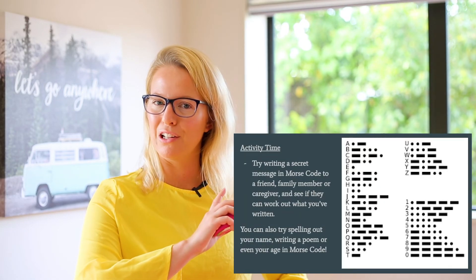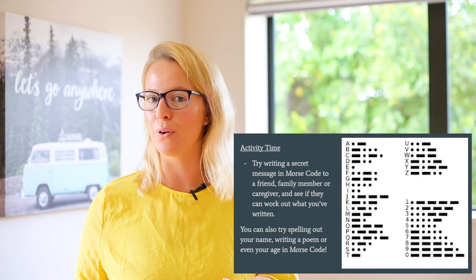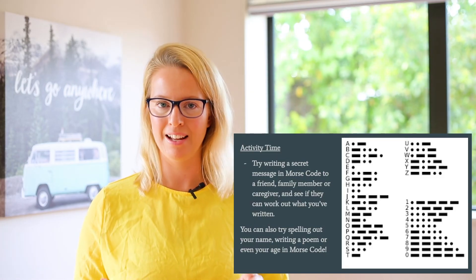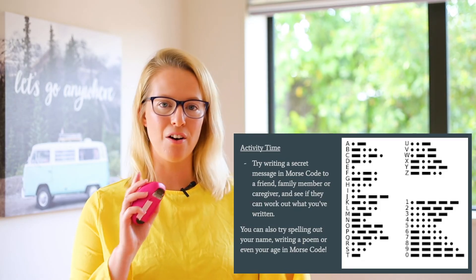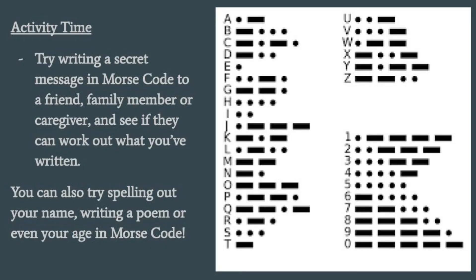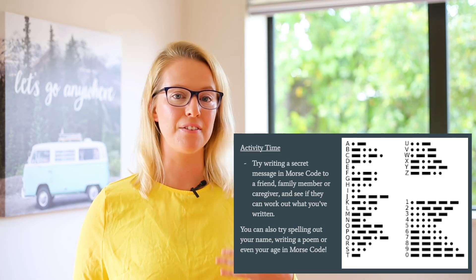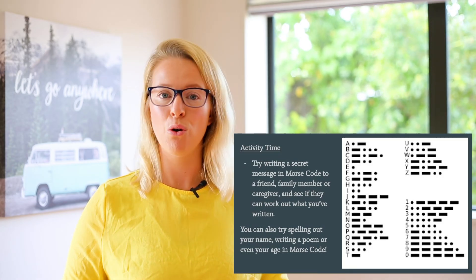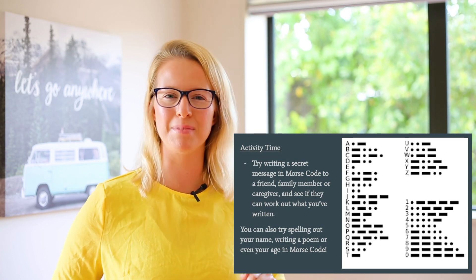Now that you've done all the learning, it is your activity time. You're going to be writing words or maybe even sentences using Morse code. Don't worry, you don't have to think of it off the top of your head — we've got the Morse code alphabet up here with all the letters down the side. You could try writing a secret message in Morse code to a friend, family member, or caregiver, and see if they can work out what you've written. You can also try spelling out your name, writing a poem, or even writing out your age in Morse code, because not only does it have letters, it's got numbers as well. When you give your secret message to someone, you might want to show them this page or even show them the video so they can figure out the code for themselves.